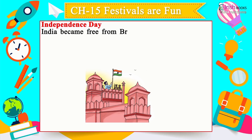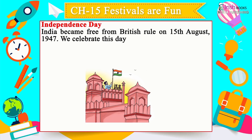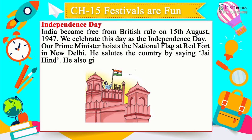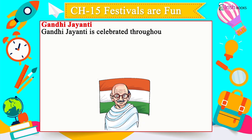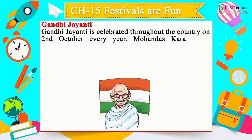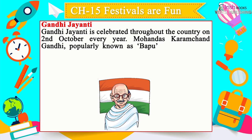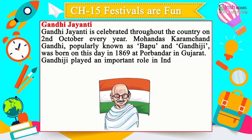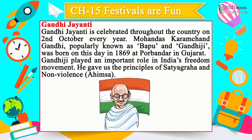Independence Day: India became free from British rule on 15th August 1947 — we celebrate this as Independence Day. The Prime Minister hoists the national flag at Red Fort, New Delhi, and salutes the country by saying 'Jai Hind'. Gandhi Jayanti is celebrated on 2nd October — Mohandas Karamchand Gandhi (Bapu) was born in 1869 at Porbandar, Gujarat. He played an important role in India's freedom movement and gave us the principles of Satyagraha and non-violence (Ahimsa).